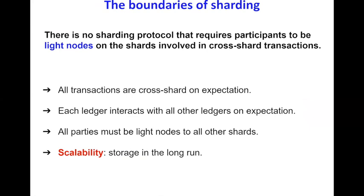We show that there is no sharding protocol that requires participants to be light nodes on all shards involved in cross-shard transactions. Since UTXOs are random strings, all transactions are cross-shard in expectation, meaning each ledger — each chain of the system — interacts with all other ledgers in expectation. This means all parties must be light nodes to all other shards. But since we assume a constant block size, if all parties are light nodes to every other shard, the system does not actually scale — it simply compresses information by a constant factor, which does not satisfy our scalability definition.